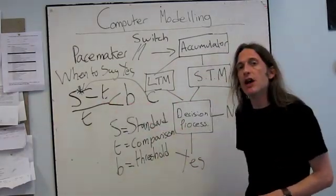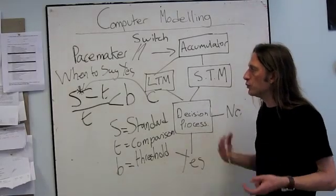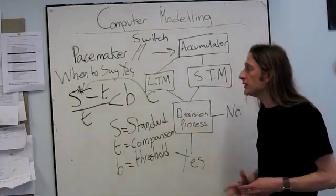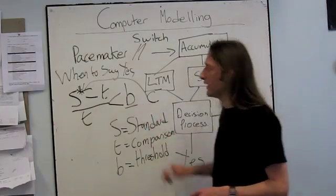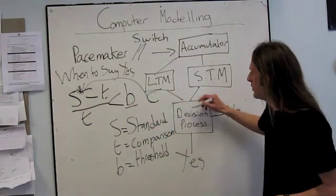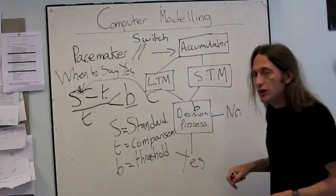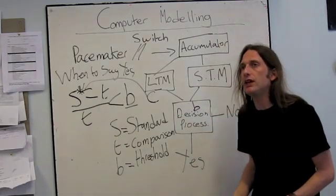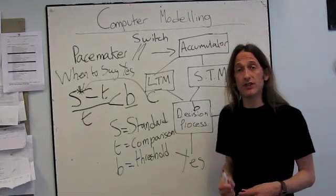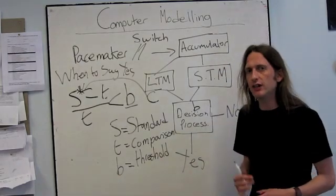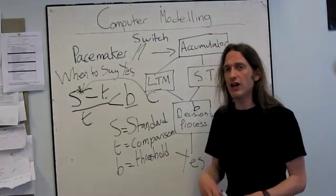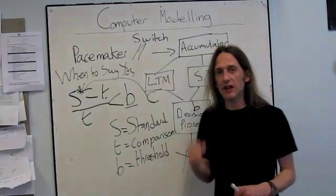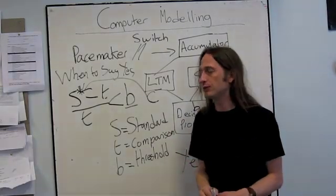Another way in which you can imagine the system would be different in human beings is the threshold value. We've got the threshold value which is operating down here. You can imagine that some people will be very conservative about saying yes. They'll only say yes, that was the standard, when they're absolutely, utterly convinced it definitely was the standard without a shadow of a doubt.